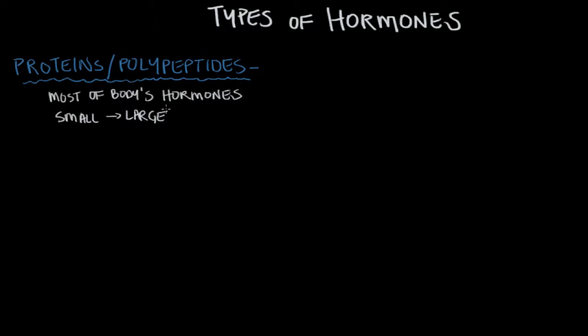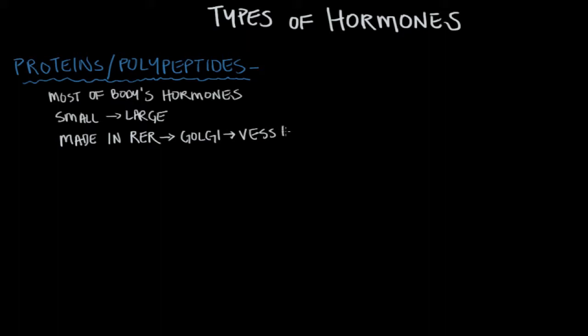The breakpoint is right around a hundred amino acids — that's where we shift from calling them polypeptides to proteins. Just like all proteins that are going to be excreted, protein and polypeptide hormones are made in the rough endoplasmic reticulum, or RER. They go from the RER to the Golgi apparatus, where they're repackaged into vesicles that can eventually be excreted from the cell.